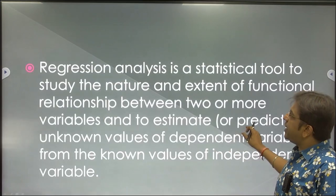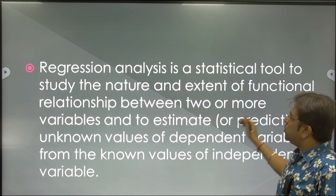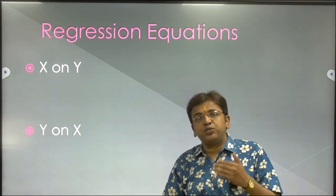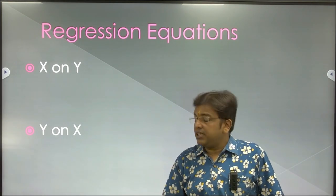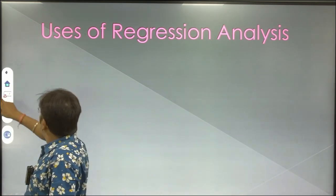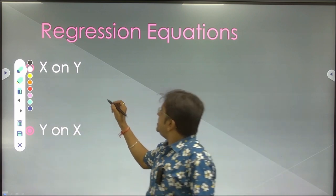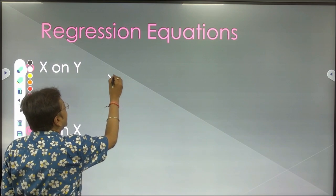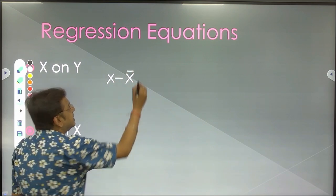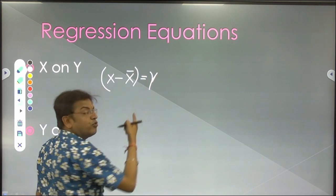Regression analysis is a statistical tool to study the nature and extent to describe things. There are two regression equations. The first regression equation is x on y — we have x minus x-bar equal to the coefficient of correlation multiplied by the standard deviation of x upon the standard deviation of y, times y minus y-bar.